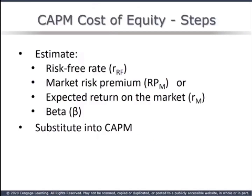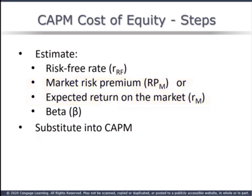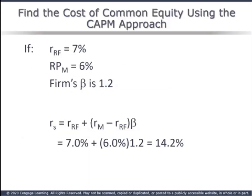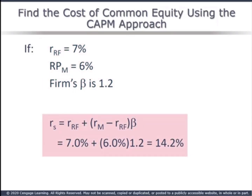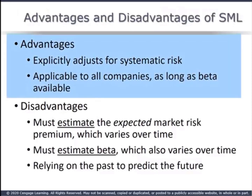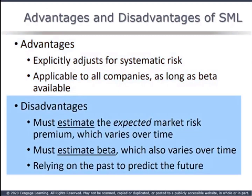To find the cost of equity using CAPM, we need a proxy for the risk-free rate — typically the long bond, the 30-year treasury — an estimate of the market risk premium or a proxy for the return on the market (typically the S&P 500), and beta. We substitute these into the CAPM-SML equation. For Coleman, the data was given: 7% risk-free rate, market risk premium of 6%, beta 1.2. We find the cost of equity is 14.2%. The CAPM approach specifically adjusts for risk and can be used for any company that has a beta. On the downside, virtually all CAPM components are estimates or proxies, and we're using historical data to estimate a future cost.